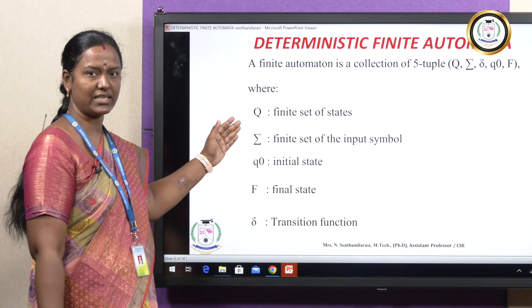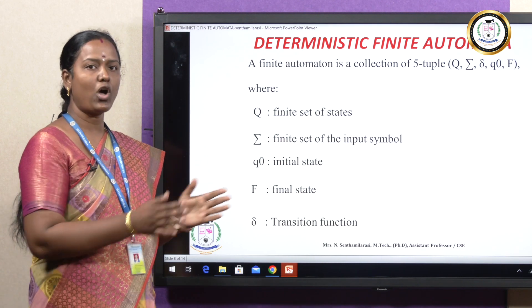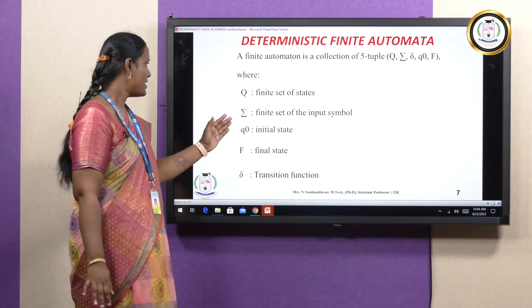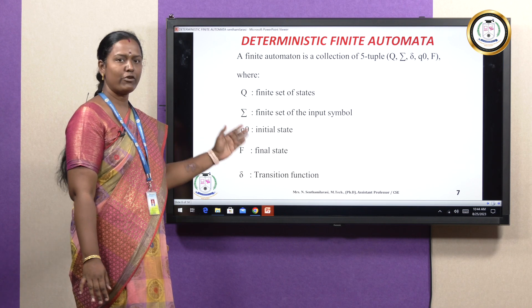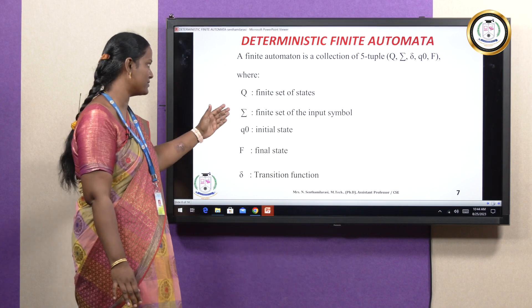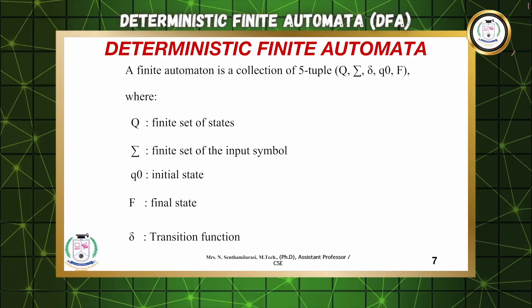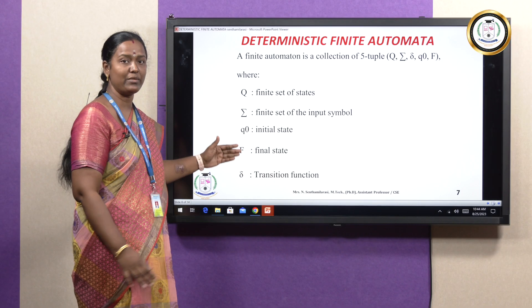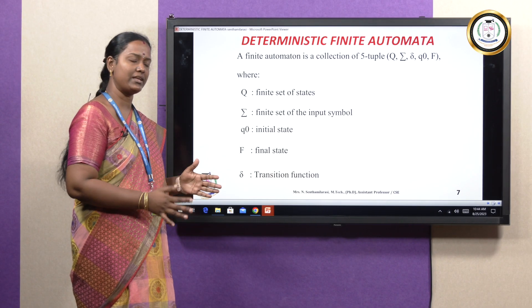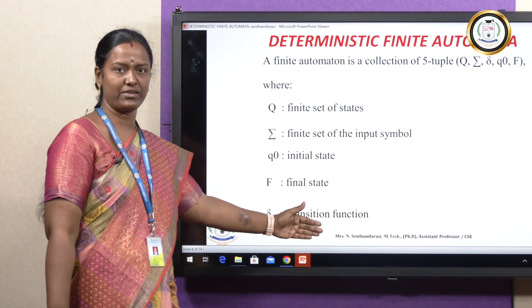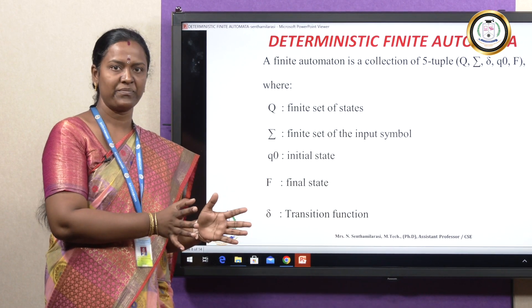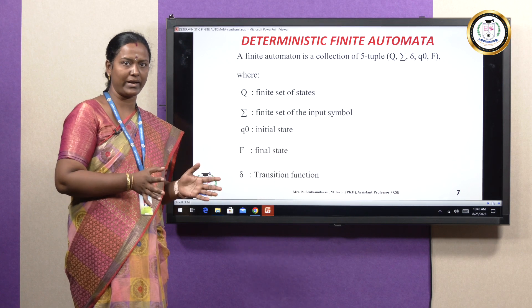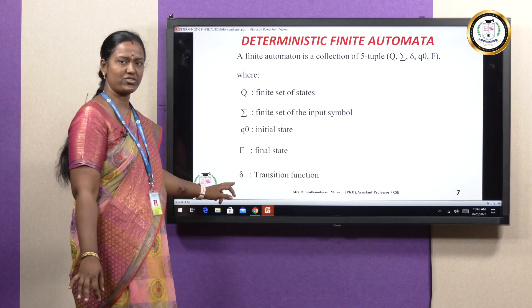Q is the finite set of states — how many states we have. Sigma is the alphabet, that is the input symbols, for example A, B or 0, 1. Q naught is the initial state, which is where it starts. F is the final set of states. Delta is the transition function — given one input, from where to where it is moving. That is represented using the symbol delta.